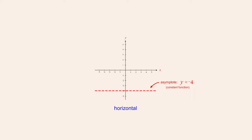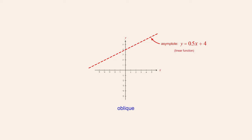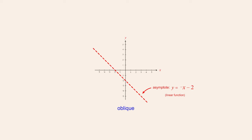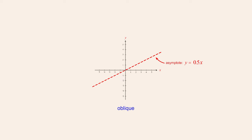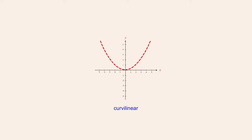Unlike horizontal asymptotes, oblique asymptotes can have different vertical positions and slopes. Therefore, the functions that describe oblique asymptotes are not as simple as the constant functions that describe horizontal asymptotes. Oblique asymptotes are instead described by linear functions. Since linear functions have an implied exponent of one, linear functions are first-degree polynomial functions. On the other hand, curvilinear asymptotes, which come in a variety of shapes, are described by higher-order polynomial functions.